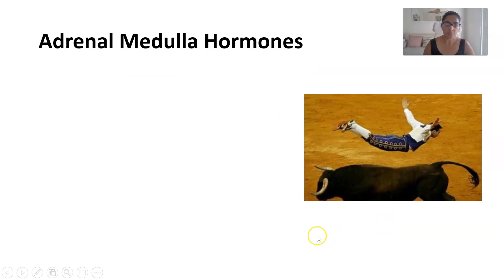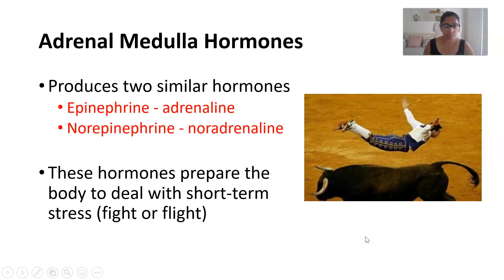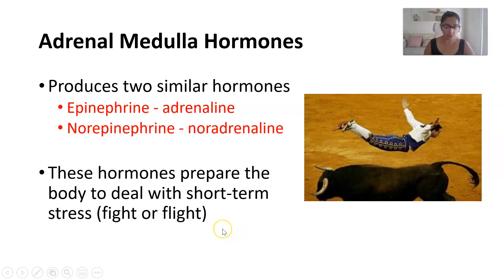We're going to look at the adrenal medulla in more detail, focusing on the fight or flight response. Imagine a situation where a raging bull is running towards you — you're definitely going to jump higher and run away faster than you would normally under extreme stress. We have two similar hormones: adrenaline and noradrenaline, sometimes referred to as epinephrine and norepinephrine — those are the American pronunciations; you can use whichever you want. These deal with short-term stress and rapidly flood the body with glucose through the breakdown of glycogen — glycogenolysis.